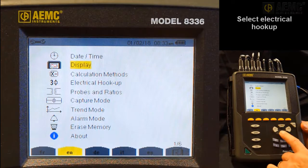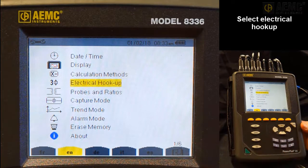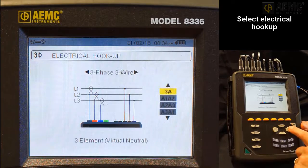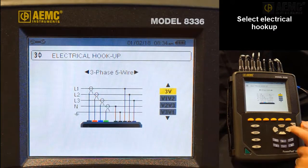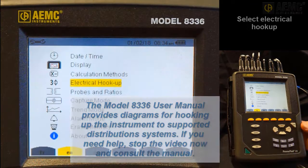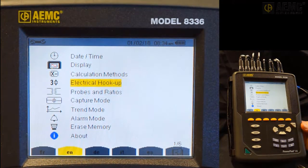Use the arrows to navigate to and highlight Electrical Hookup, then press Enter. In our example, we will connect to a simulation of a three-phase, five-wire hookup, so we will select this option and then press Enter. You are now returned to the Configuration Options screen.